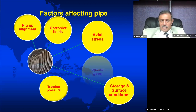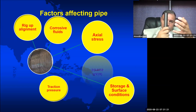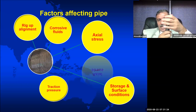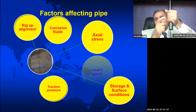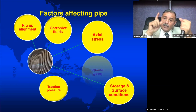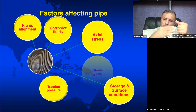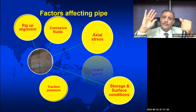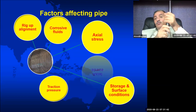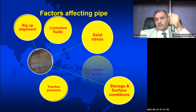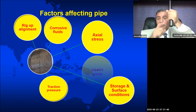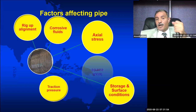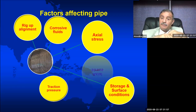Traction pressure. What holds the weight of the pipe on the surface? The injector — by grabbing with the chain of the injector on the pipe. This grabbing force, if it is too much, you are putting too much pressure on the pipe, affecting its yield strength and mechanical properties, thus affecting its life. And if you apply less pressure, the pipe will slip, creating friction between the chain and the pipe — this will also affect pipe life.